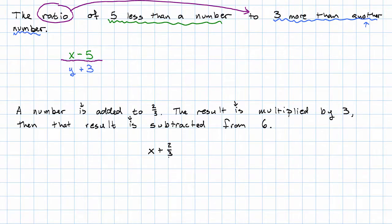So a number is added to two thirds. Notice I've written this kind of in the middle of the page. I'm going to build up my expression gradually. The result, that's this whole thing, is multiplied by three. I'm going to write the three in front of the parentheses because that looks nicer. Then that result, this whole thing, is subtracted from six.